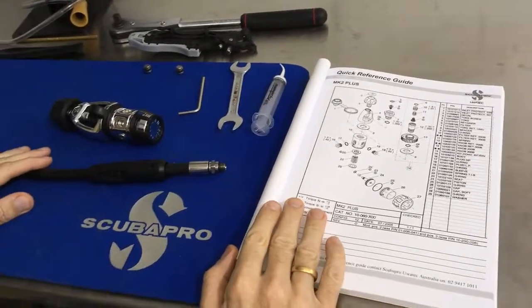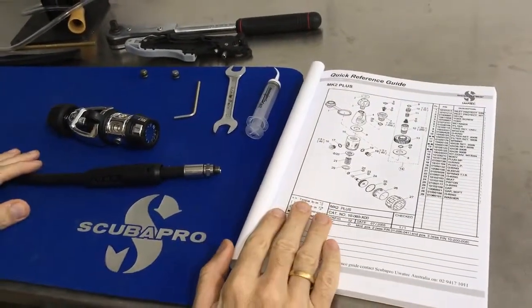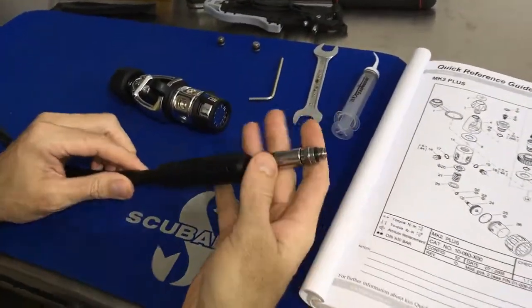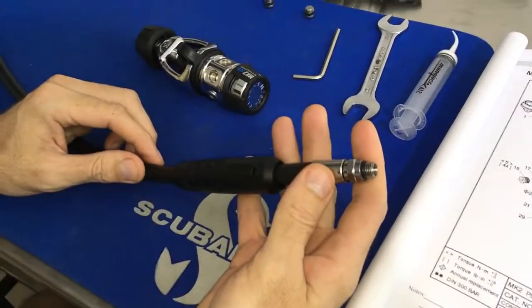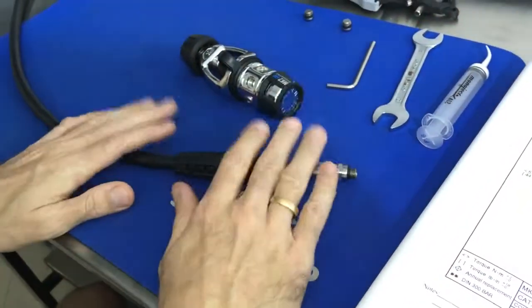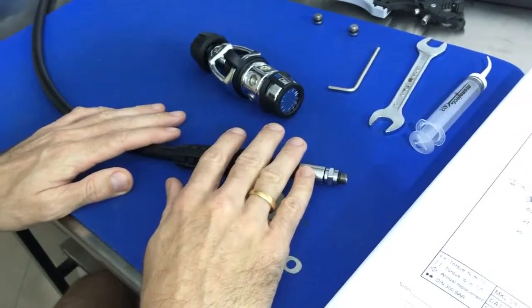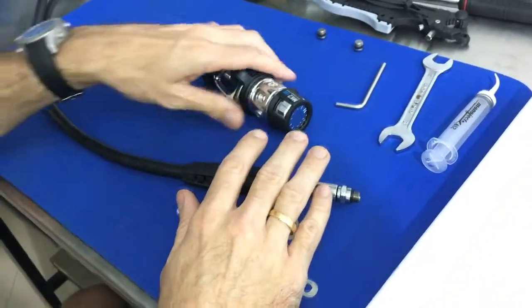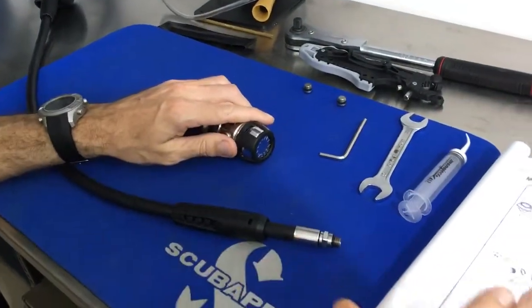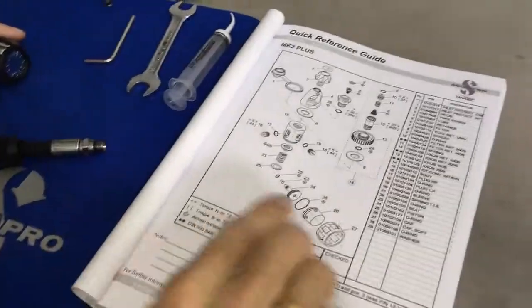Okay guys, so today we're going to look at how to attach a low pressure hose, whether that's for a second stage or a BPI connected to the BCD or the dry suit, or even a high pressure hose to the first stage which you can see here. This is the schematic that we're going to use.